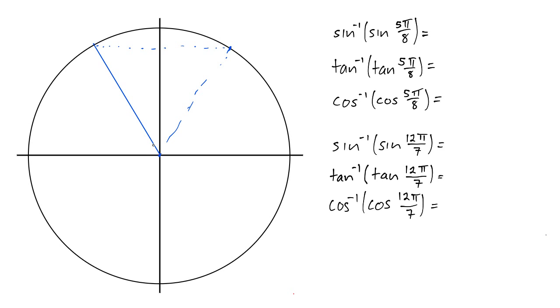Well, to get to 5π over 8, we could have started on the negative x-axis and rotated backwards 3 eighths of π because 5 is 3 from 8. So let's just go forward 3π over 8 from the positive x-axis, so we get 3π over 8.